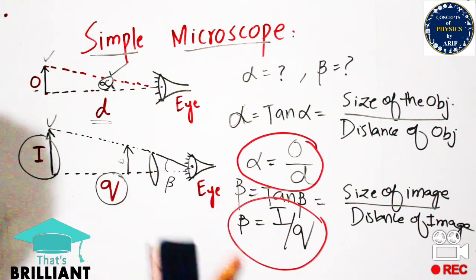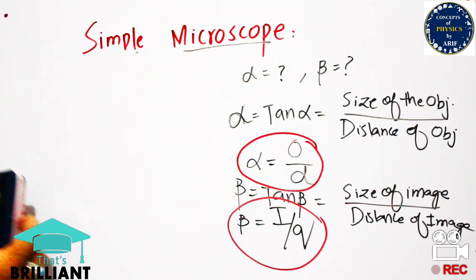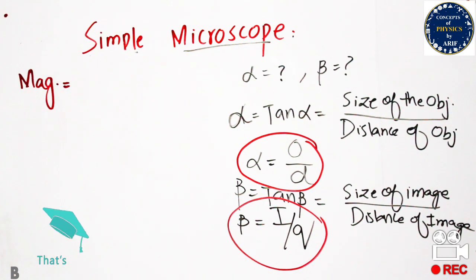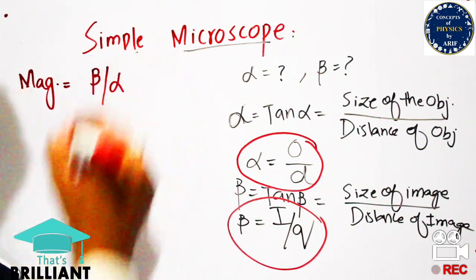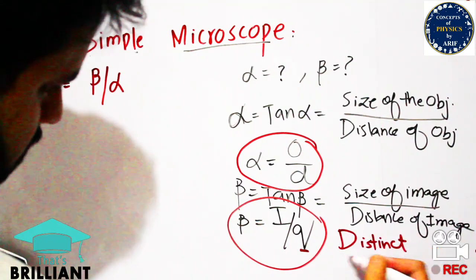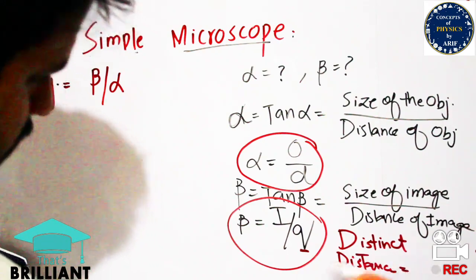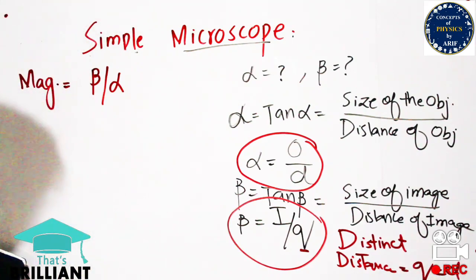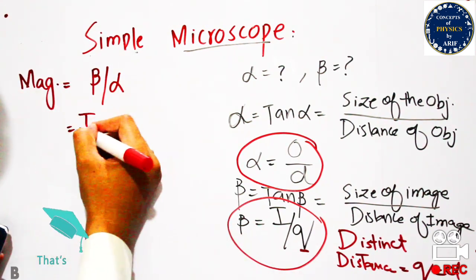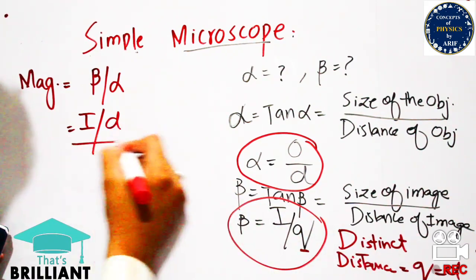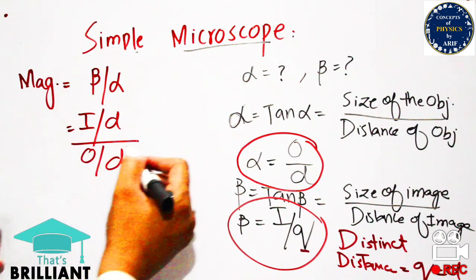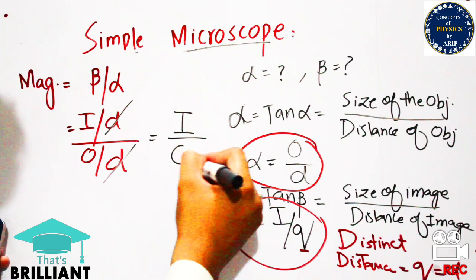The formula for magnification is beta over alpha. We apply the condition that Q equals D, which is 25 cm normally. Substituting into the formula, beta becomes I/D and alpha becomes O/D. The D cancels out from both, giving the final result: magnification equals I over O.